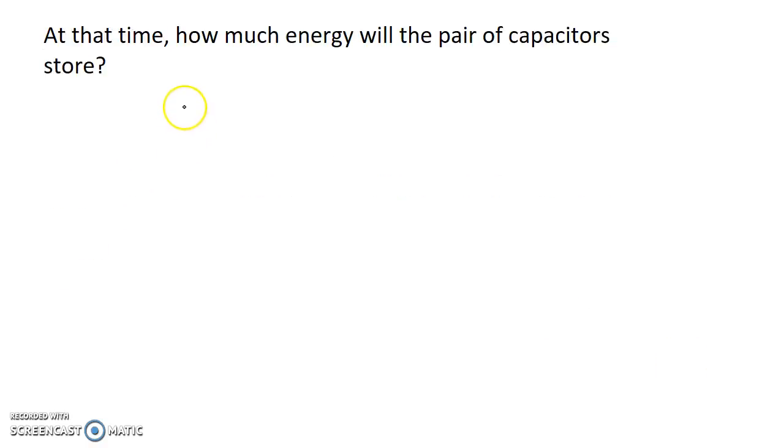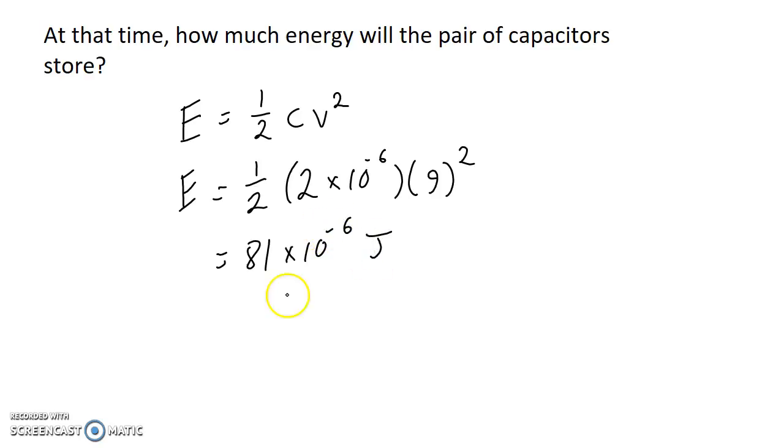For this we have an equation for the energy stored in a capacitor. That's one-half C V squared. We could treat each capacitor separately, or we could just combine them into a single equivalent capacitor, which is what I'm going to do here. We know their combined capacitance is 2 microfarads, and the voltage to which they're charged at that time is 9 volts. Plug that into your calculator, and you get 81 times 10 to the negative 6 joules or 81 microjoules.